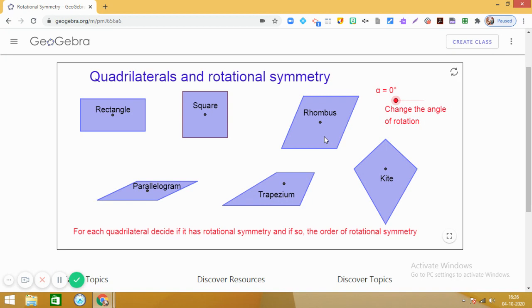And order of rotation for these three shapes, rectangle, rhombus and parallelogram will be two because two times we are getting the same shape in between. And for a square, angle of rotation is 90 degrees. And order of rotation is four. But for trapezium and the kite, it did not work for an angle less than 360 degrees.